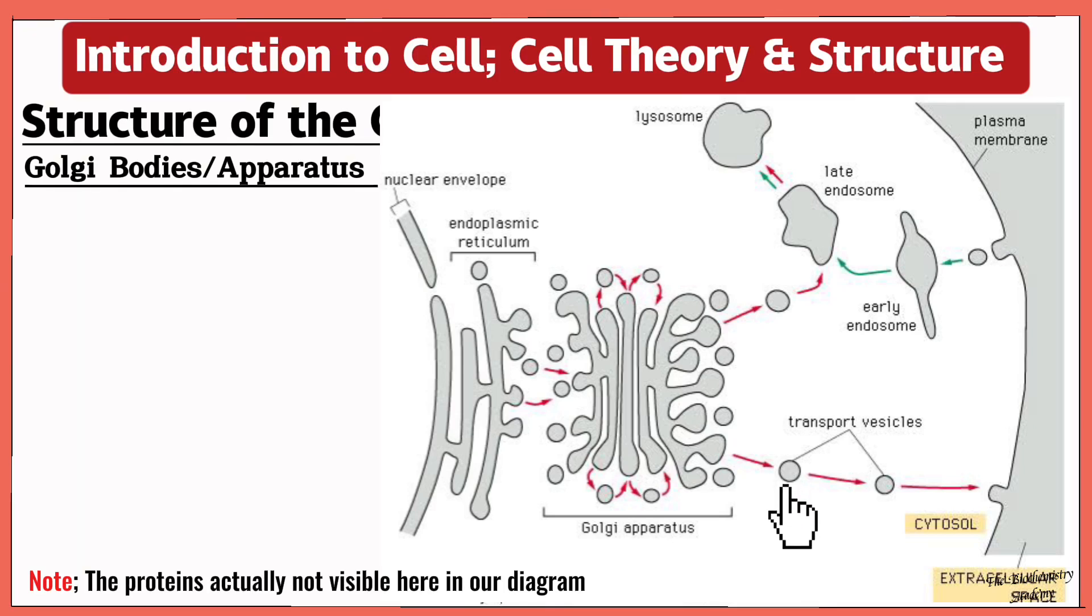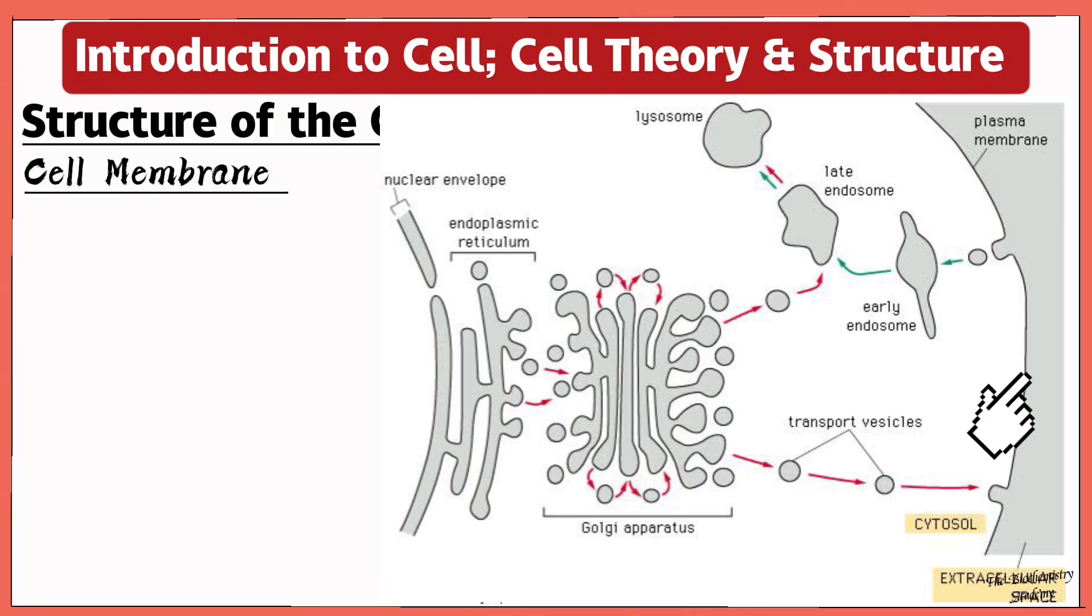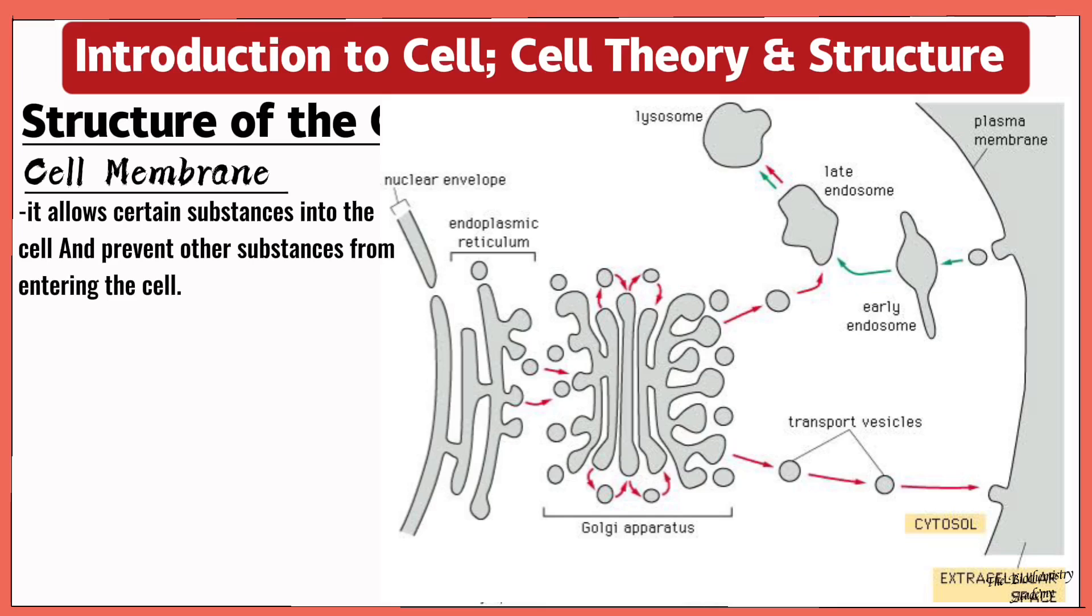Now this vesicle that surrounds the protein, once it reaches the cell membrane, remember or we should note that the cell membrane also functions in allowing certain substances in or out of the cell and it prevents other substances which may be harmful to the cell from entering the cell. And this feature is what we call selective permeable, meaning that it prevents certain substances from entering the cell and allows certain substances to enter the cell.